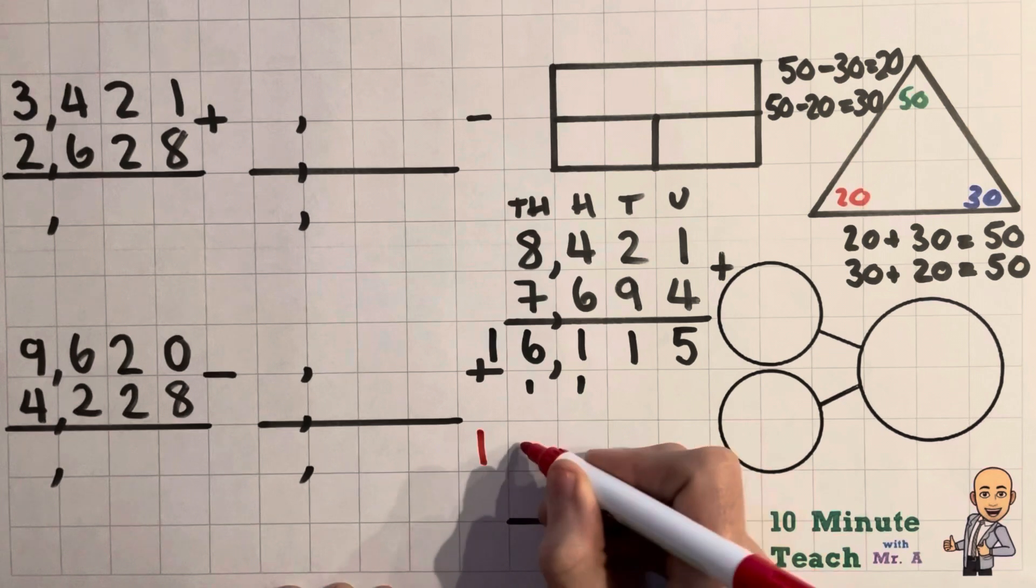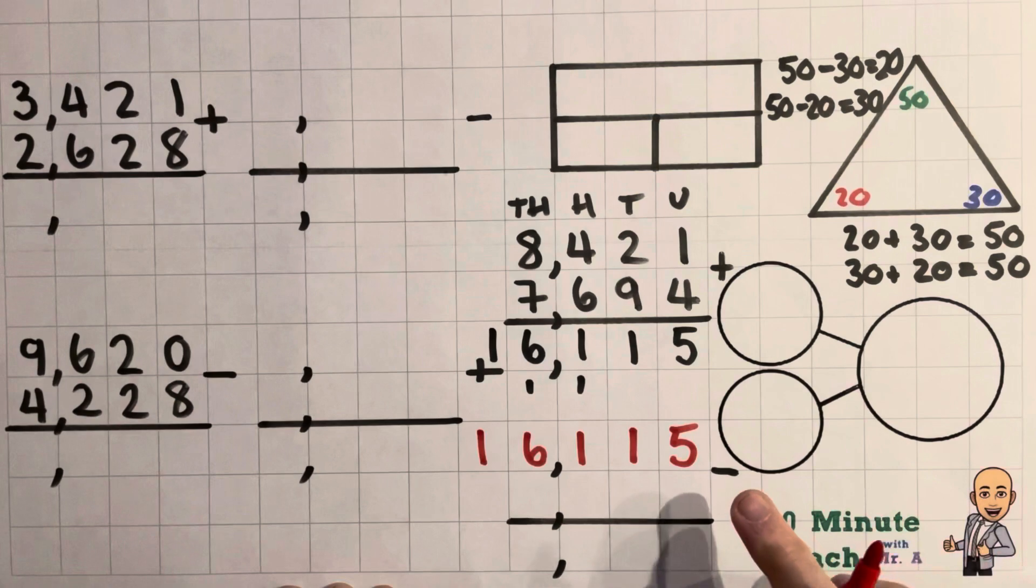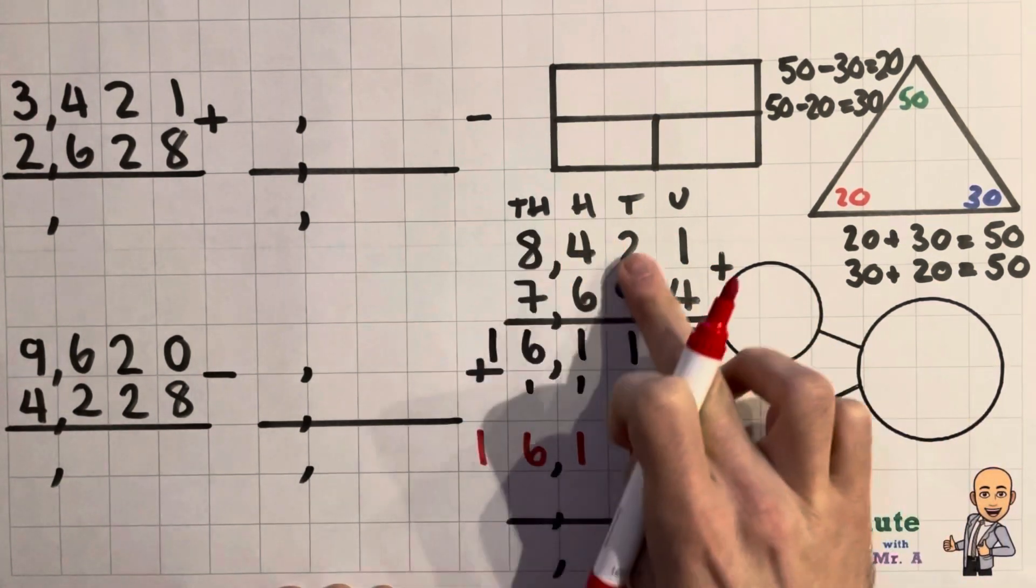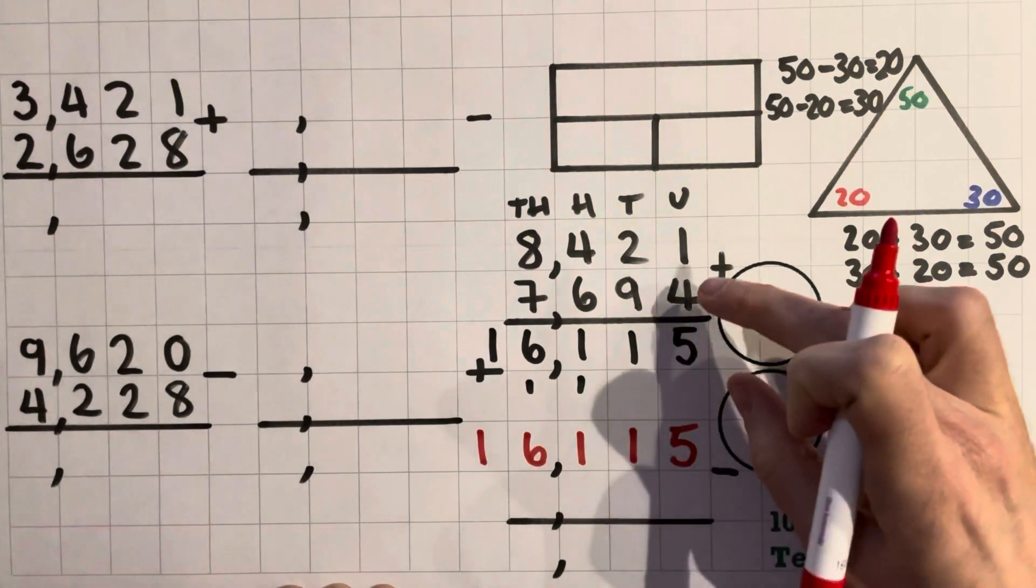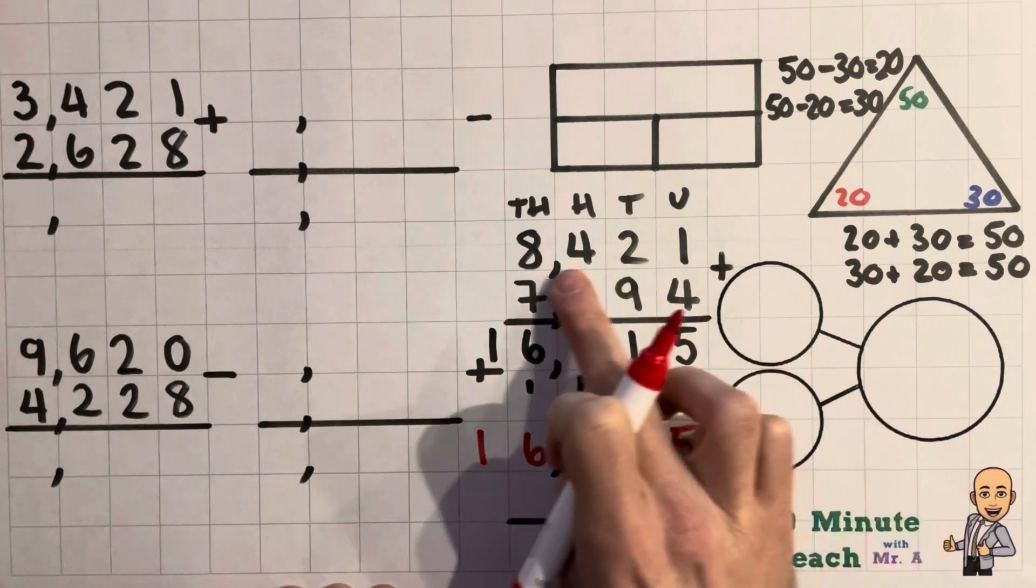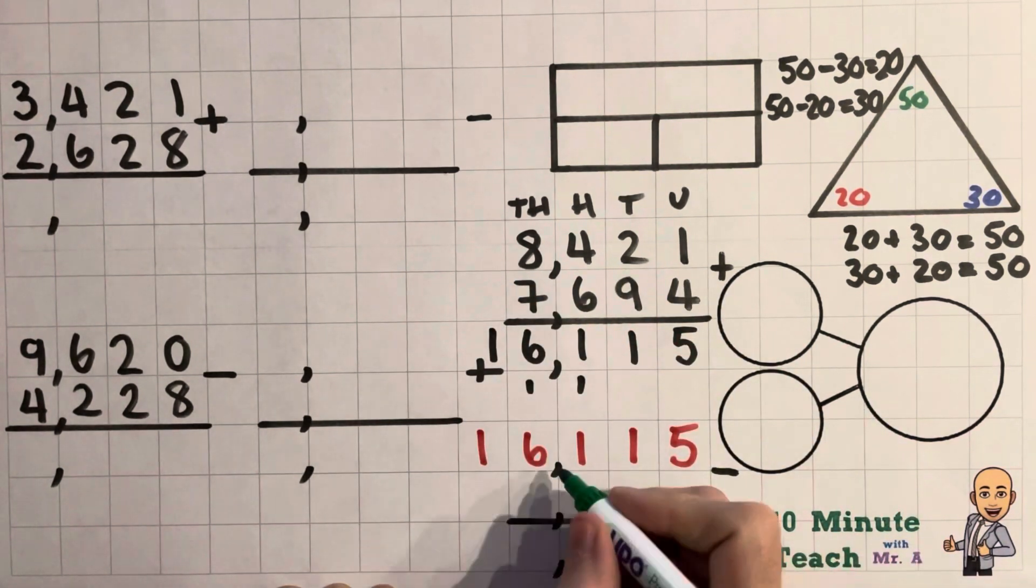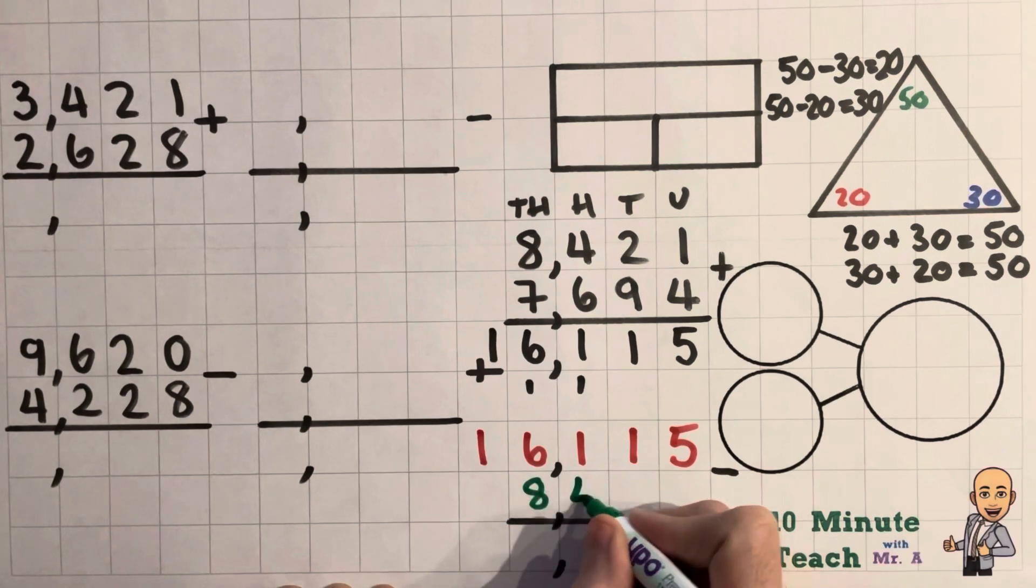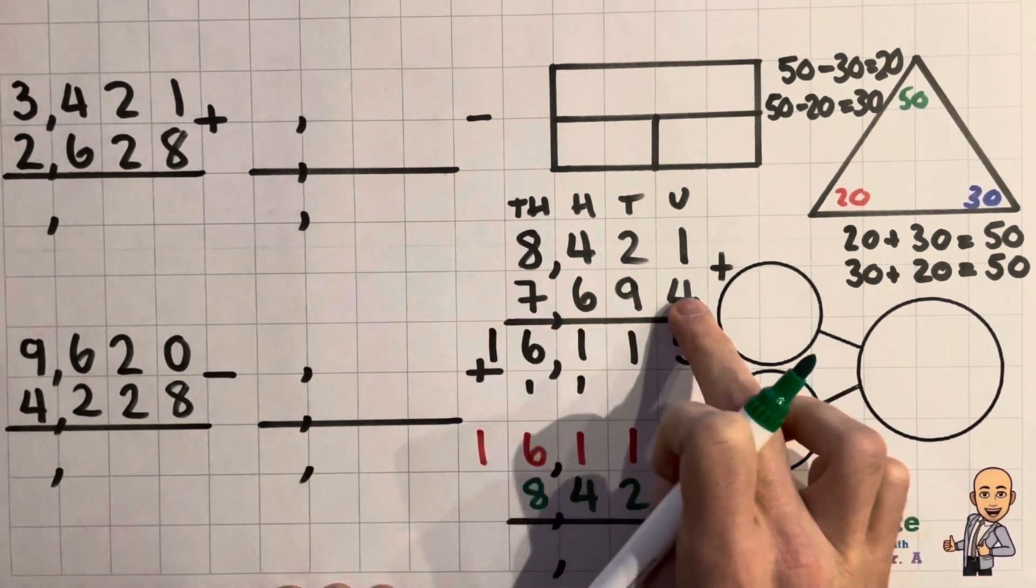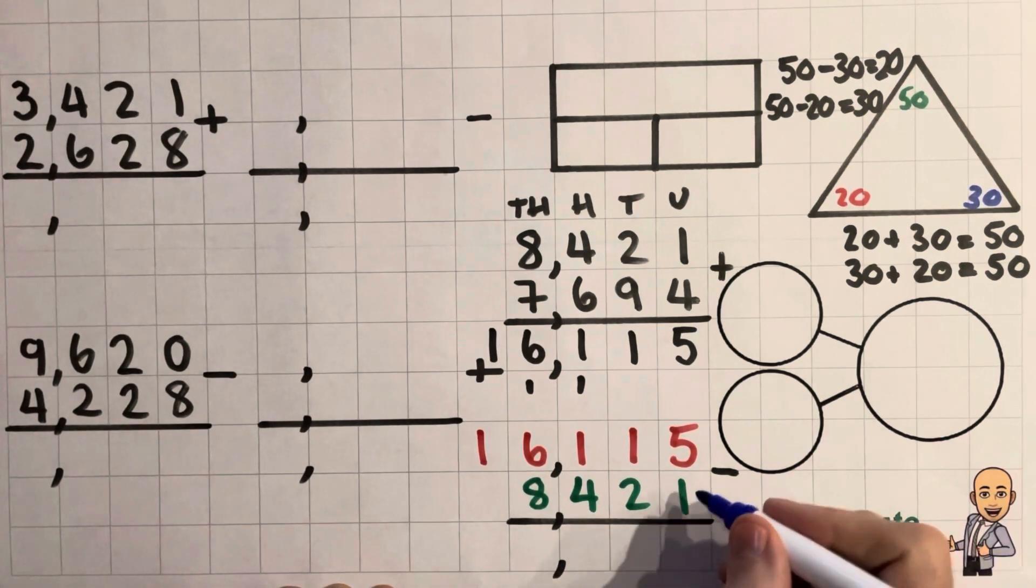So we've got 16,115. And we're going to be subtracting any one of these numbers, and we should end up with the other one. So if I subtract this one we should end up with this one. So let's have a little go at that. So 8,421. So if my calculation is correct I will end up with 7,694. So let's see if Mr. Allen was right.